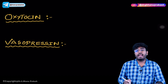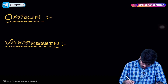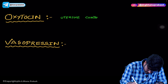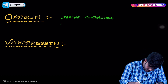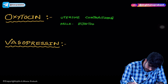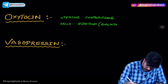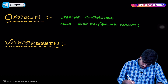Now let's discuss important points about oxytocin and anti-diuretic hormone, which is also called vasopressin. Oxytocin helps in uterine contractions and also in milk ejection — also called galactokinesis — which is the ejection of milk from the breast after delivery.